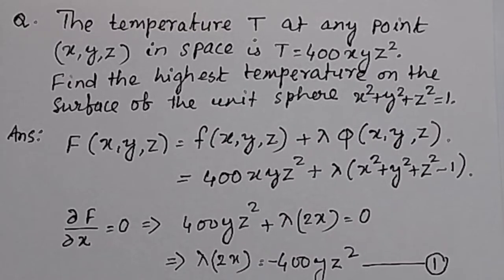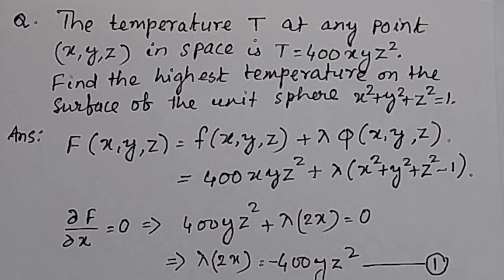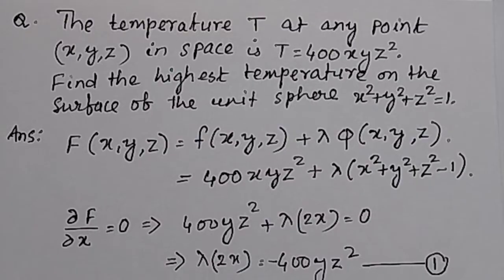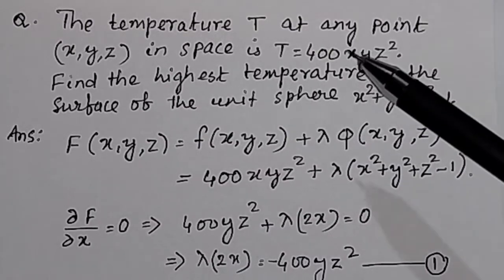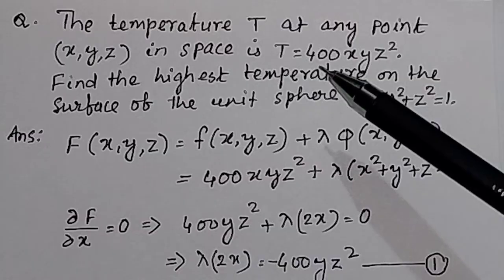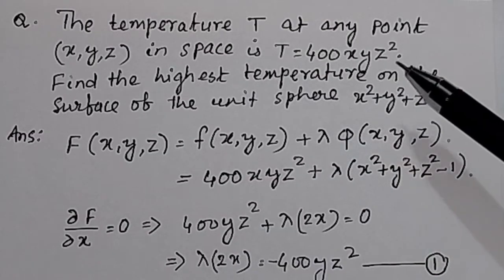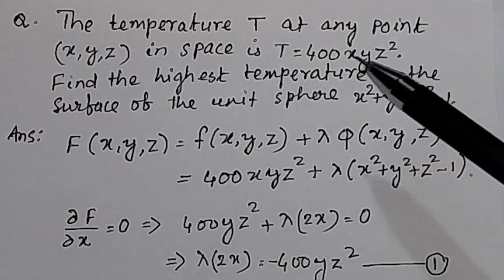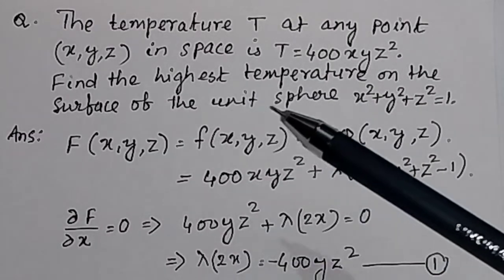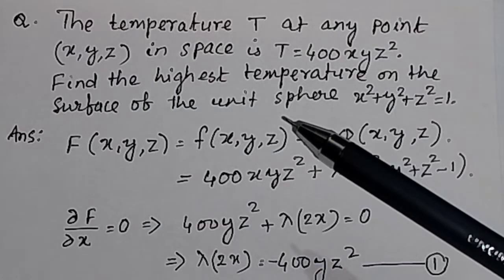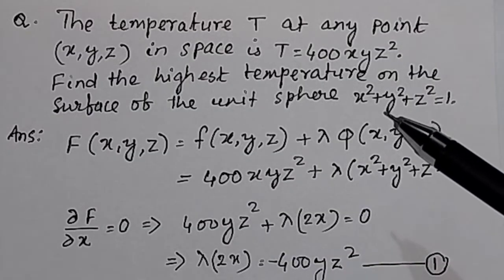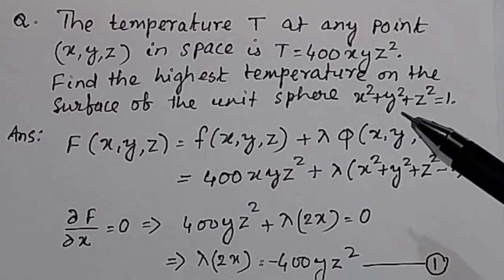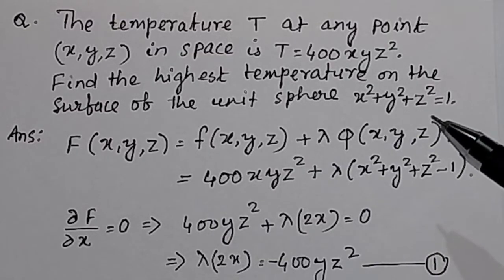The temperature T at any point xyz in space is given by the equation T = 400xyz². Find the highest temperature on the surface of the unit sphere, where x² + y² + z² = 1.